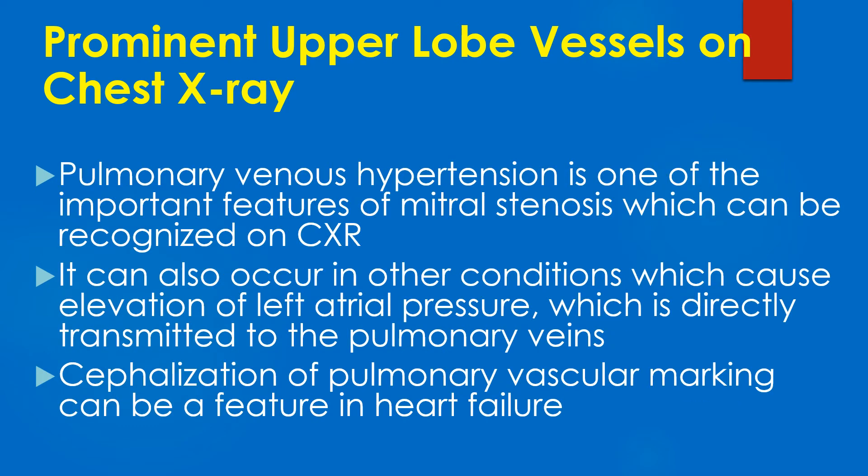Pulmonary venous hypertension is one of the important features of mitral stenosis, which can be recognized on the chest x-ray. It can also occur in other conditions which cause elevation of left atrial pressure, which is directly transmitted to the pulmonary veins. Cephalization of pulmonary vascular markings can be a feature in heart failure.